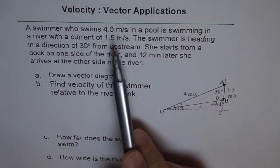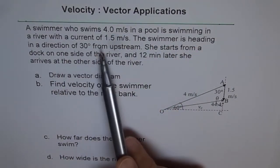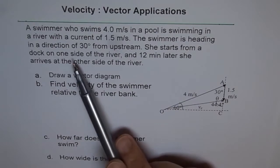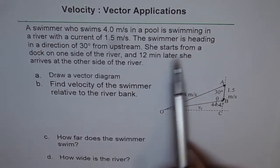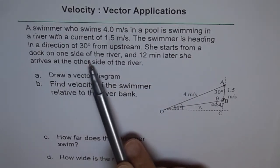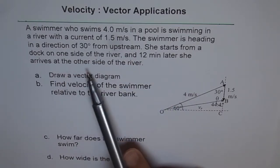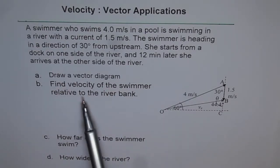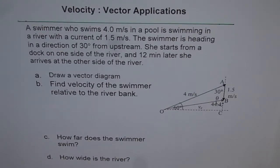A swimmer who swims 4 meters per second in a pool is swimming in a river with a current of 1.5 meters per second. The swimmer is heading in a direction of 30 degrees from upstream. She starts from a dock on one side of the river and 12 minutes later she arrives at the other side. The questions are: draw a vector diagram, find the velocity of the swimmer relative to the river bank, how far does the swimmer swim, and how wide is the river.